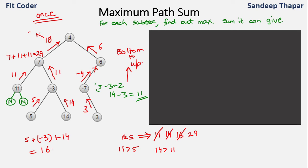The right subtree of node 4 can contribute a maximum of 6, and the left subtree can contribute 18, which is 11 + 7. We must choose either the left or right path because each node can only be counted once — taking both would count node 7 twice. So the left subtree provides 18, and at node 4 we get 18 + 4 + 6 = 28. Since 28 < 29, the result remains 29.